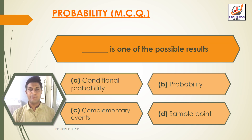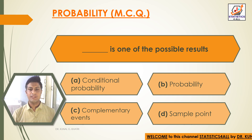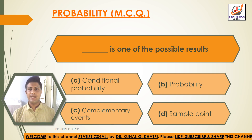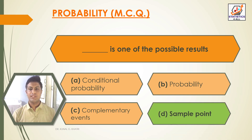Next question: dash is one of the possible results. Option A: conditional probability. Option B: probability. Option C: complementary events. Option D: sample point. The answer is Option D — sample point is one of the possible results.